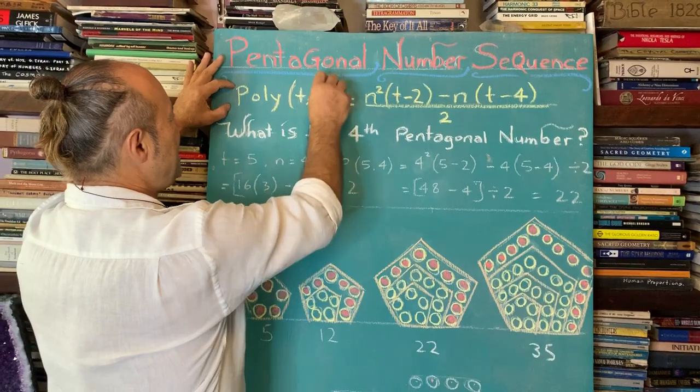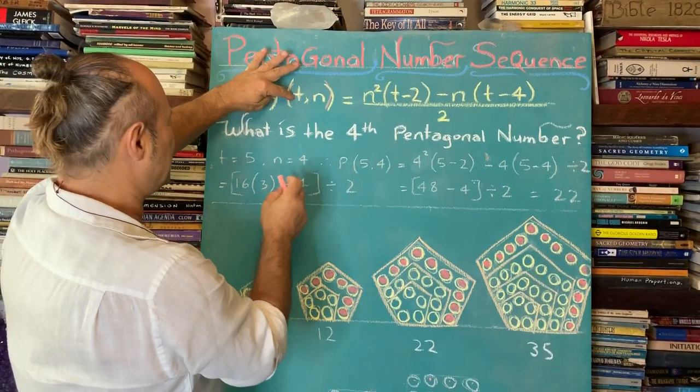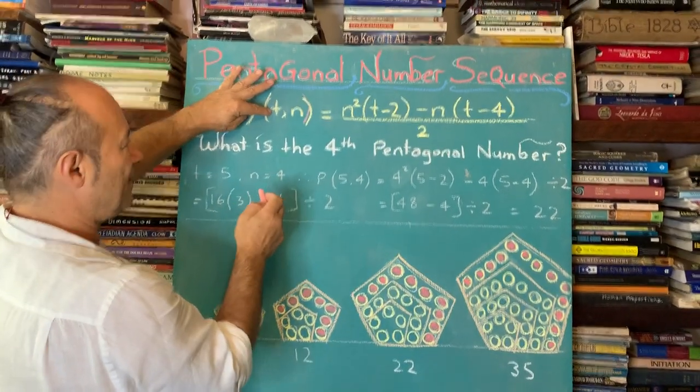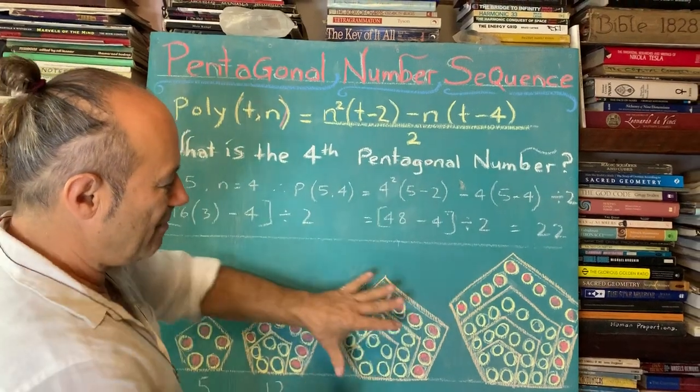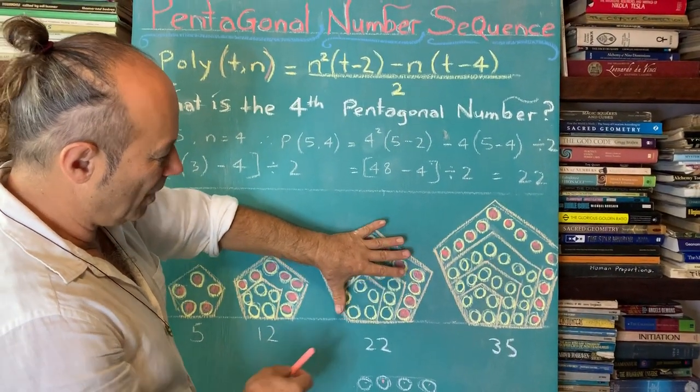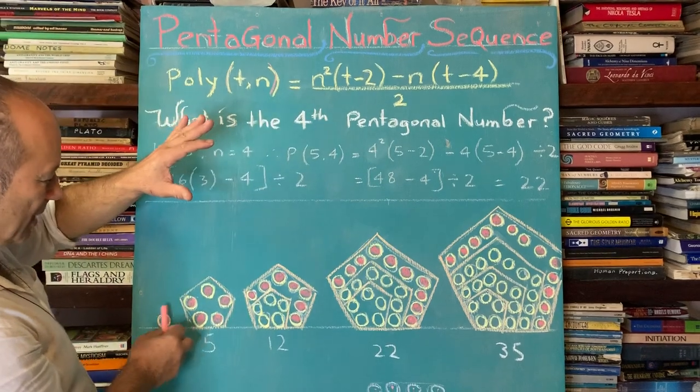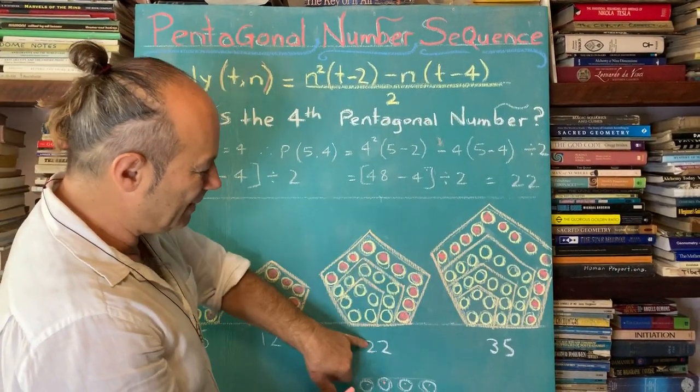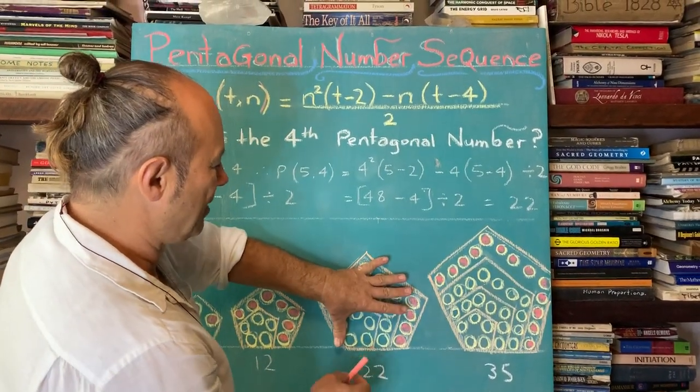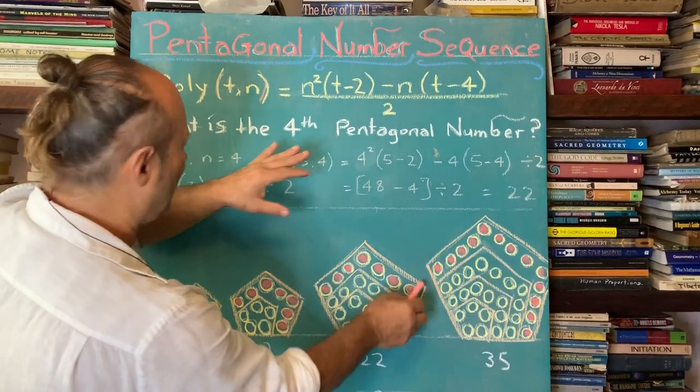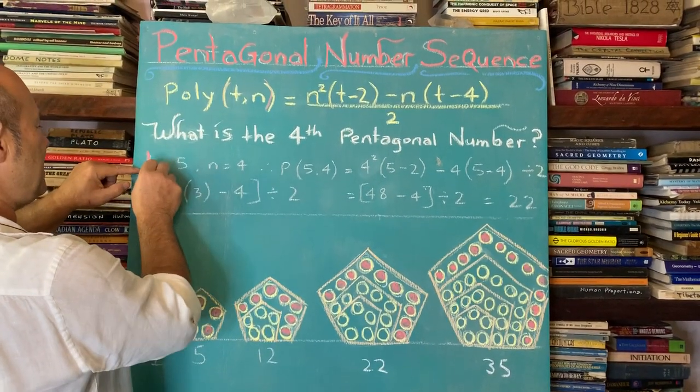So it's called poly TN. T is going to be for the pentagon. We want to discover what the fourth pentagon number is. So it's one, two, three, four. So ultimately, we want to get 22. In this thing, because there's five sides, the polygon, the T equals five.